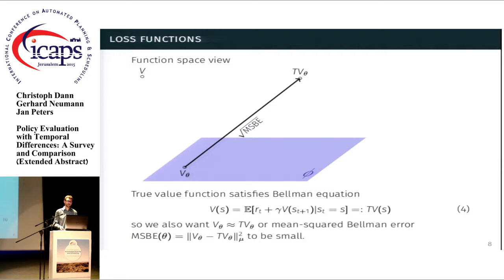And so intuitively, since the true value function satisfies this equation, we can also try to enforce that our estimate satisfies this equation at least approximately. So we can use the difference between the left and right-hand side for our estimate as an error function, which is the mean squared Bellman error.